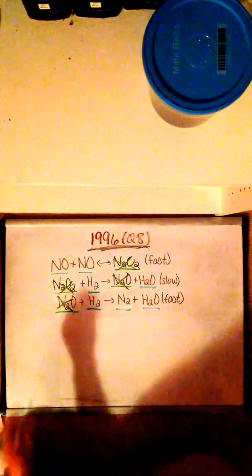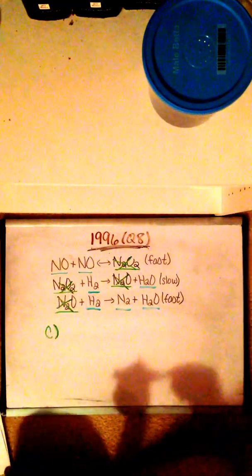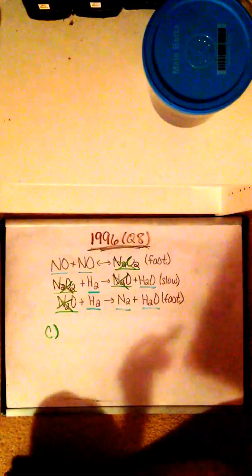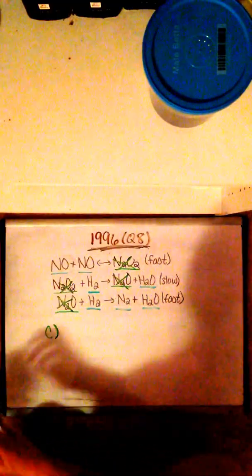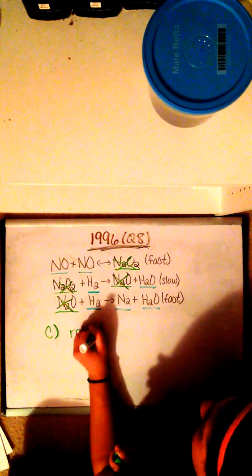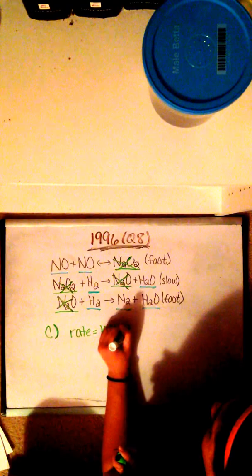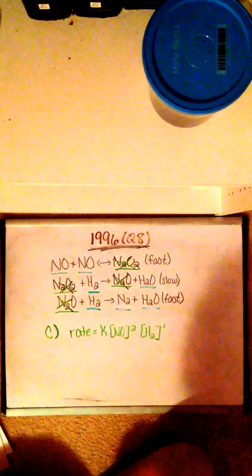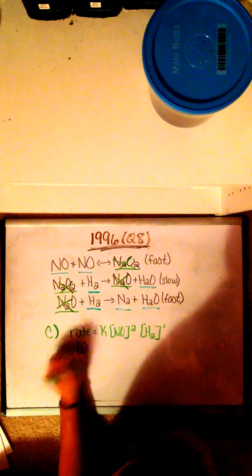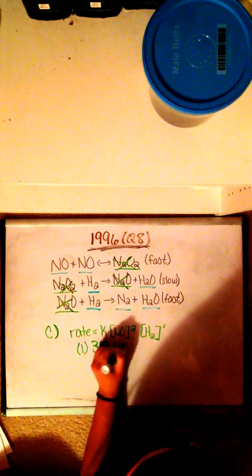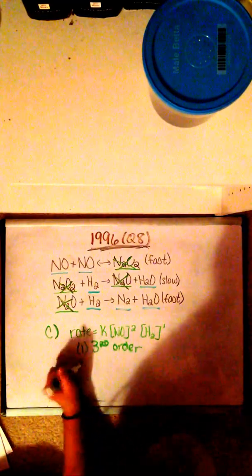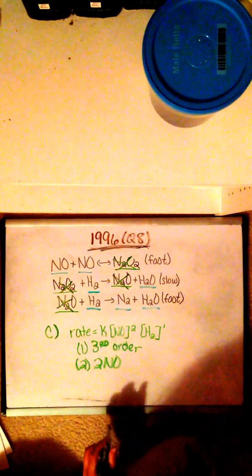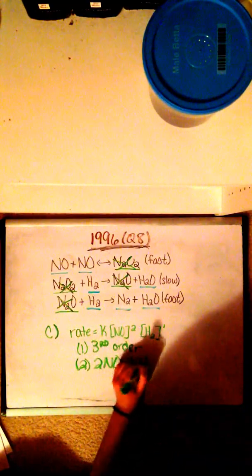Okay, moving on to part C. In part C, it says, from the mechanism represented above, which are these three steps, a student correctly deduces that the rate law for the reaction is rate equals K times the concentration of NO squared times the concentration of H2 to the first. The student then concludes that 1, the reaction is third order. The student then says that the mechanism involves the simultaneous collision of two NO molecules and one H2 molecule.